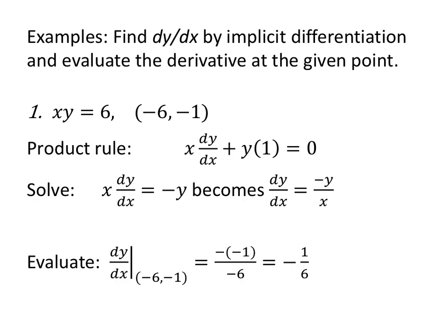Let's find dy/dx by implicit differentiation and evaluate the derivative at the given point. For xy equals 6 at the point (−6, −1): use the product rule on the left, so x times dy/dx plus y times 1 equals 0. Subtracting y from both sides and dividing by x gives dy/dx equals negative y over x. That's the derivative.